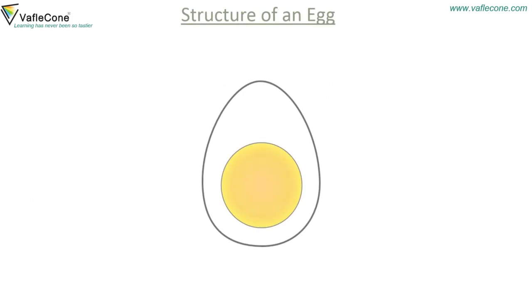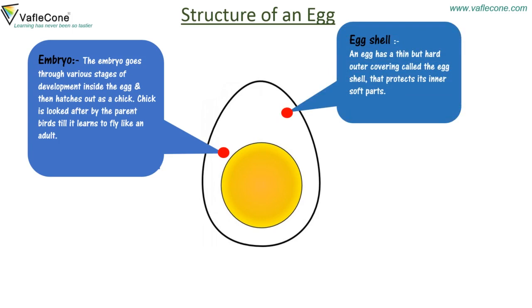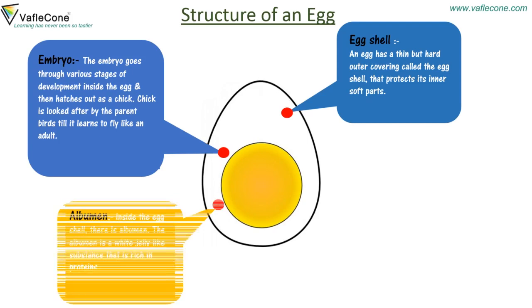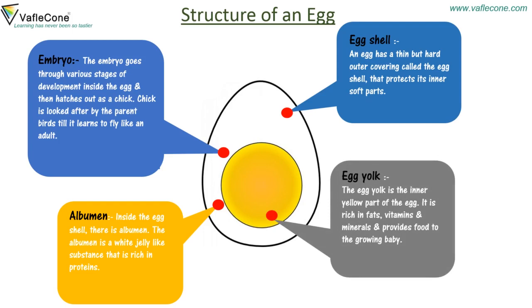Birds build nests to lay eggs. Structure of an egg: Embryo — the embryo goes through various stages of development inside the egg and then hatches out as a chick. The chick is looked after by the parent birds till it learns to fly like an adult. Egg shell — an egg has a thin but hard outer covering called the egg shell that protects its inner soft parts. Albumin — inside the egg shell there is albumin, a white jelly-like substance that is rich in proteins. Egg yolk — the egg yolk is the inner yellow part of the egg, rich in fats, vitamins and minerals, and provides food to the growing baby.